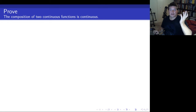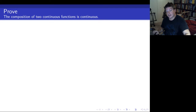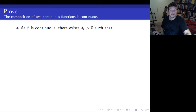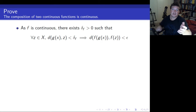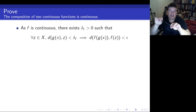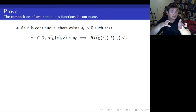We have that f is continuous and g is continuous, so let's write those out. With a bit of hindsight: as f is continuous, there is a delta sub f greater than zero such that for every z in X, if the distance between g(x) and z is less than delta f, we get that their images are less than epsilon. We're trying to prove f composed with g is continuous, so f needs to be continuous not at x but at g(x), because you take x, hit it with g, then hit it with f. So we need continuity of f centered at g(x).